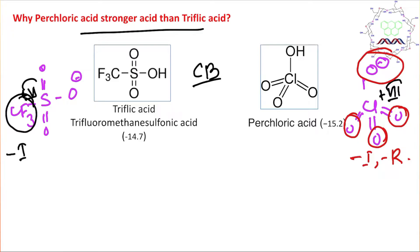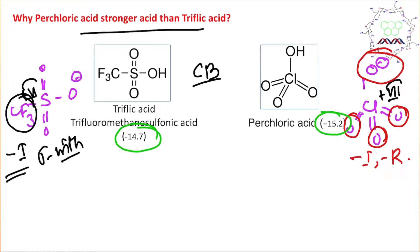The CF₃ group is a strong sigma-withdrawing group, and its withdrawing effect is considered to be between that of fluoride and chloride. That is why, although perchloric acid and triflic acid differ in acidity, their pKa values are very close: −15.2 and −14.7 respectively, with only a slight difference.